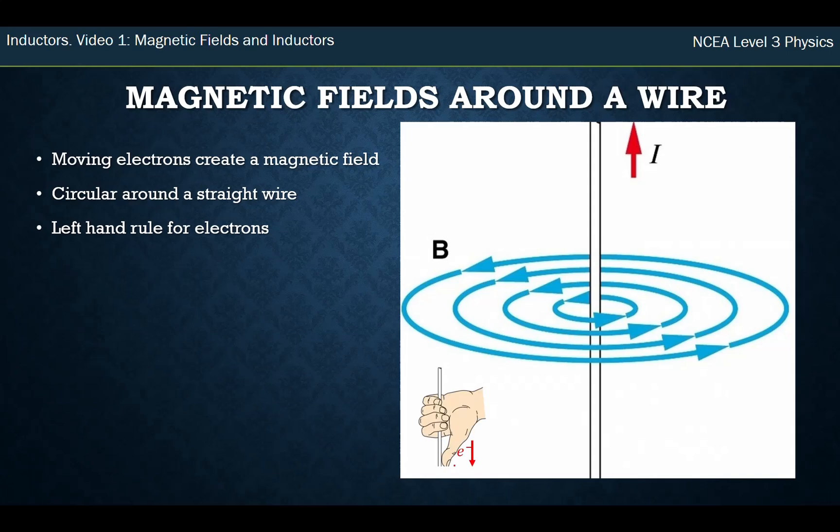So we consider not the current, but which way are the electrons going. They go in the opposite way. You grab that with your left hand, and that tells you which way the arrows go on the circular field of the magnetic field.